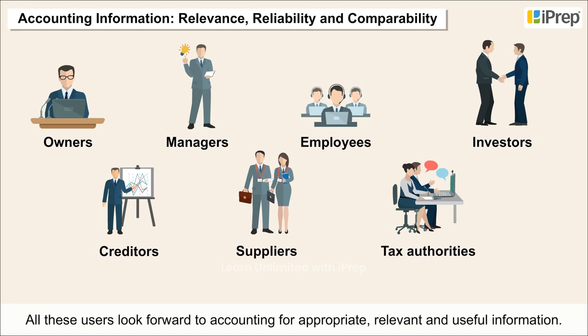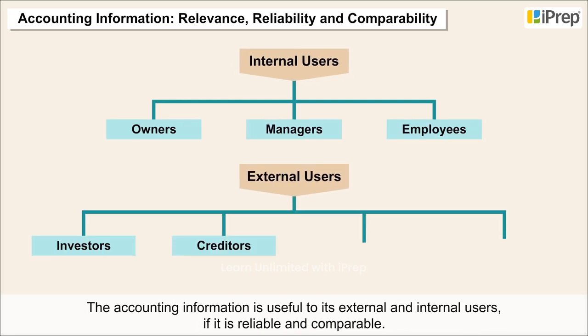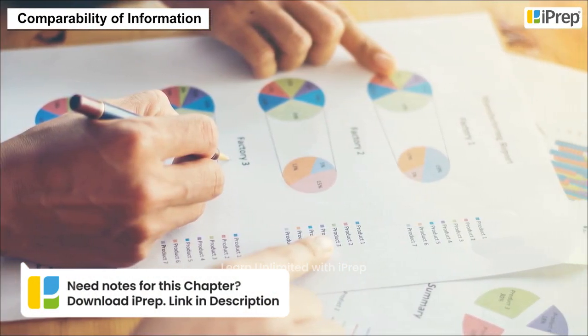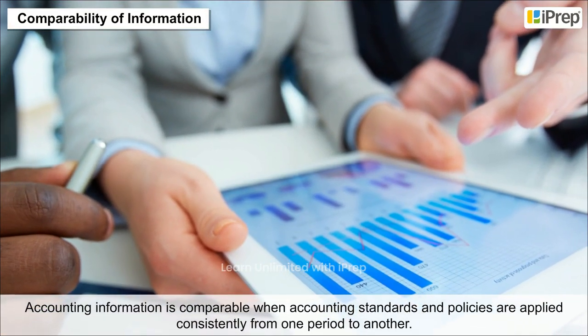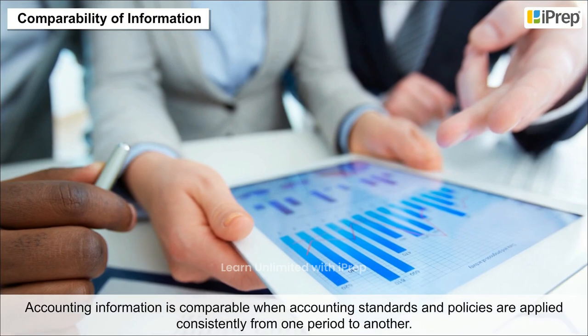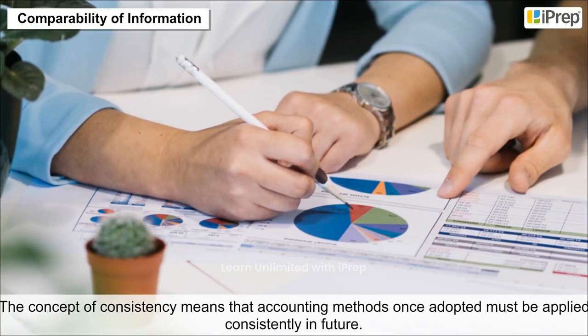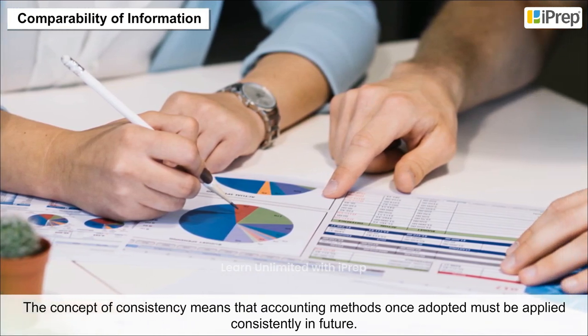All these users look forward to accounting for appropriate, relevant, and useful information. The accounting information is useful to its external and internal users if it is reliable and comparable. Accounting information is comparable when accounting standards and policies are applied consistently from one period to another.